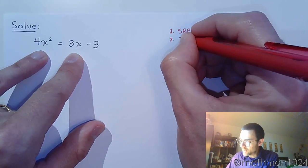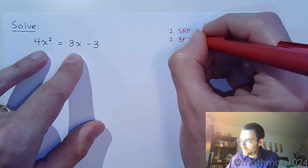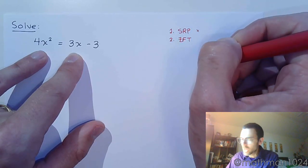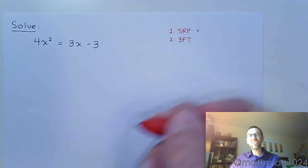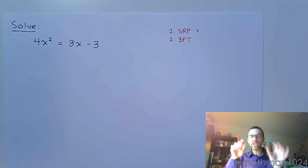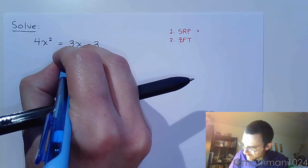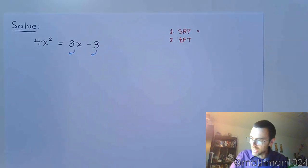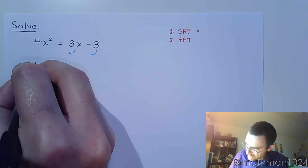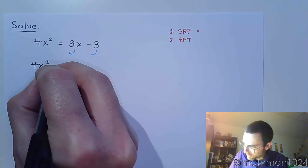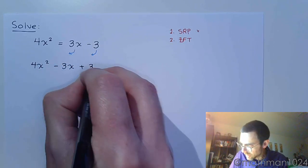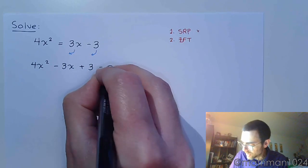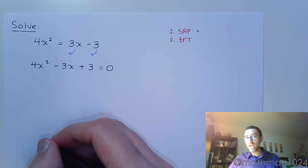The second thing we try is the zero factor theorem. So the zero factor theorem would say to try to factor this, but it's kind of hard to see when it's on different sides of the equation. So first, let's go ahead and move these guys from the right side over here to the left. So that becomes 4x squared minus 3x plus 3 equals 0. So let's do a quick check to see if this guy can factor.